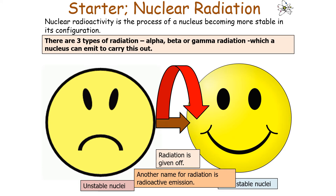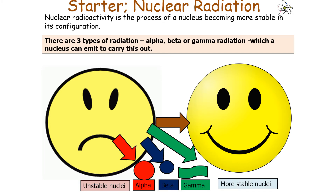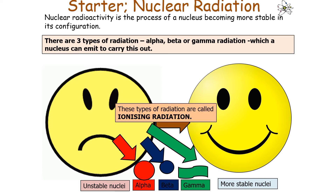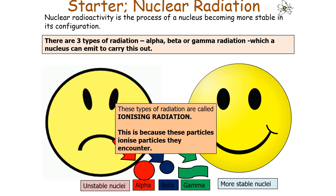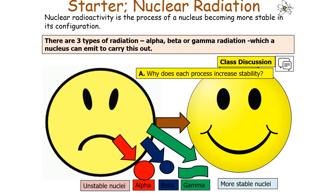Another name for this radiation is radioactive emissions. There are three types of radioactive decay an unstable nucleus can undergo, so there are three forms of radiation dependent on the type of unstable nucleus. All radiation always originates from the nucleus of an atom — you can either emit alpha radiation, beta radiation, or gamma radiation to become more stable. All these types of radiation are called ionizing radiation, because these radiations ionize particles they encounter, which means they can knock electrons out of atoms. But why does the emission of alpha, beta, and gamma increase the nucleus stability?